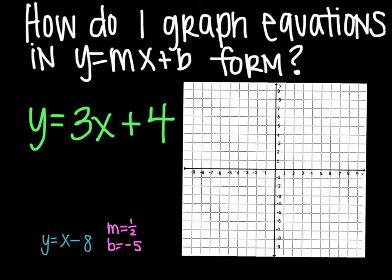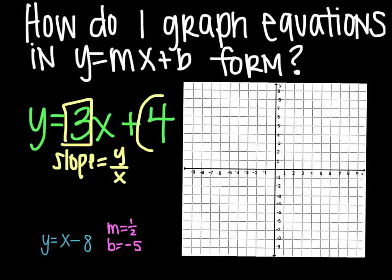First one, we have y equals 3x plus 4 and you will want to note here that the 3 is your slope, which is y over x. And then the 4 here is your y-intercept. Remember your intercept is where it crosses the y-axis, so that would be 0, 4.